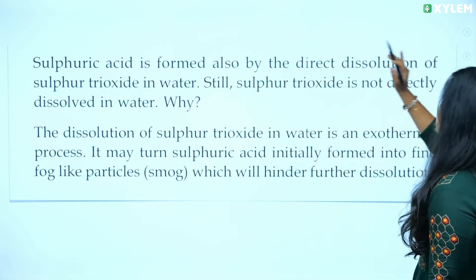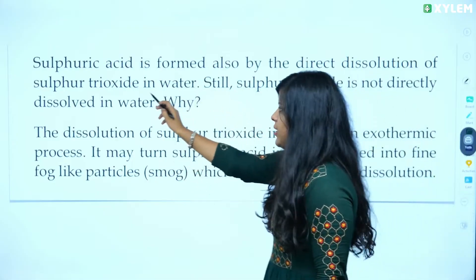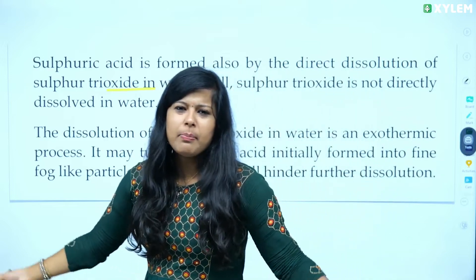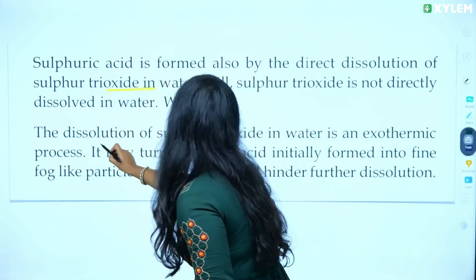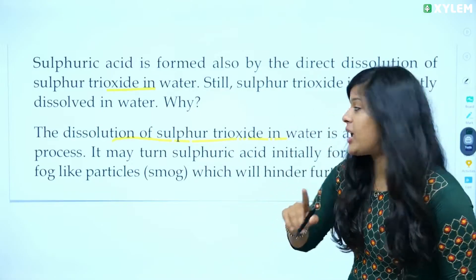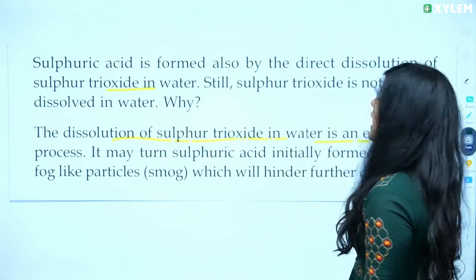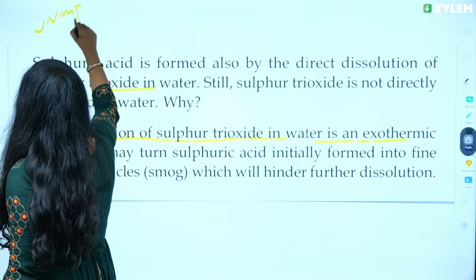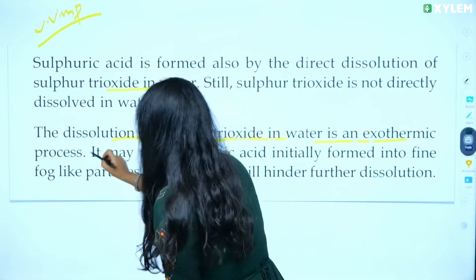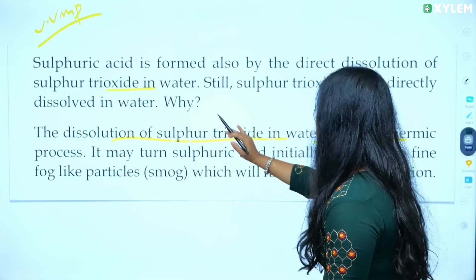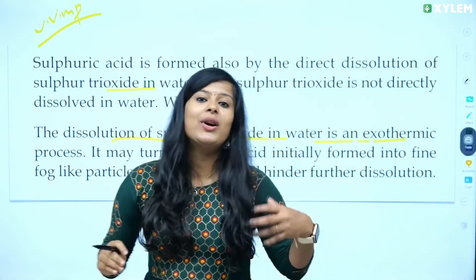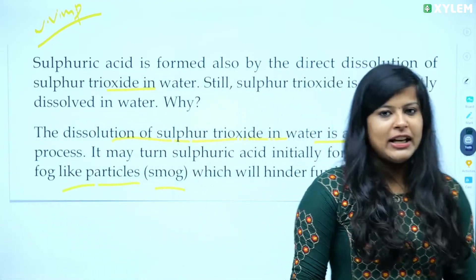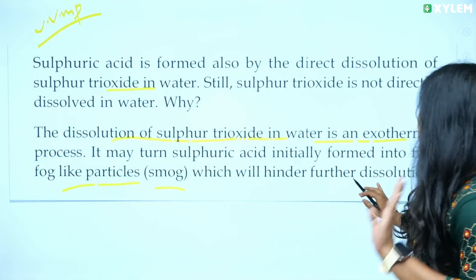Sulfuric acid is also formed by the direct dissolution of sulfur trioxide in water. But sulfur trioxide is not directly dissolved in water. Why? Because the dissolution of sulfur trioxide in water is an exothermic reaction. Sulfuric acid is initially formed into fine fog-like particles, which are smoke-like particles, and this will hinder further dissolution.